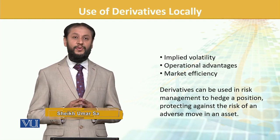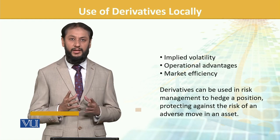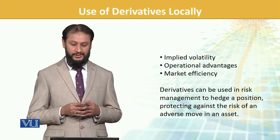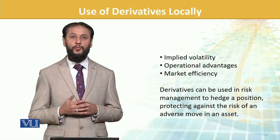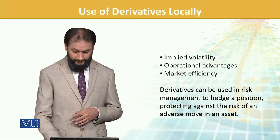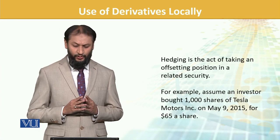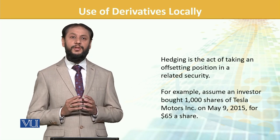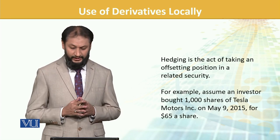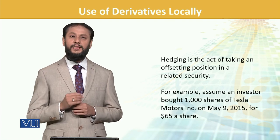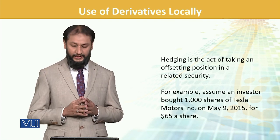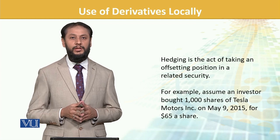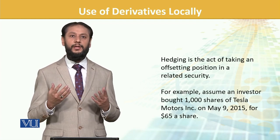Protecting against risk of an adverse movement — this is the main point, the main reason derivatives exist: to safeguard against adverse movements. Hedging is the act of taking an offsetting position in a related security. For example, an investor took a thousand shares from Tesla — Tesla, you know, it's the name on every investor's mind, the electric car company.